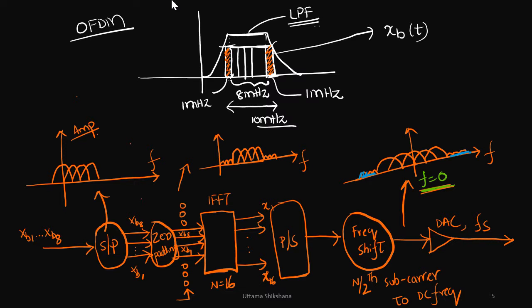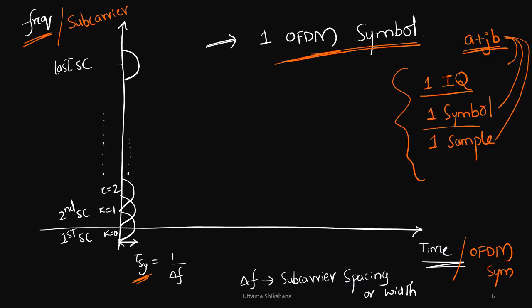And finally after frequency shift, the entire spectrum was placed at f equals zero as the center. Especially in this slot, this is the one which is called as resource grid or OFDM grid as per the 3GPP spec.